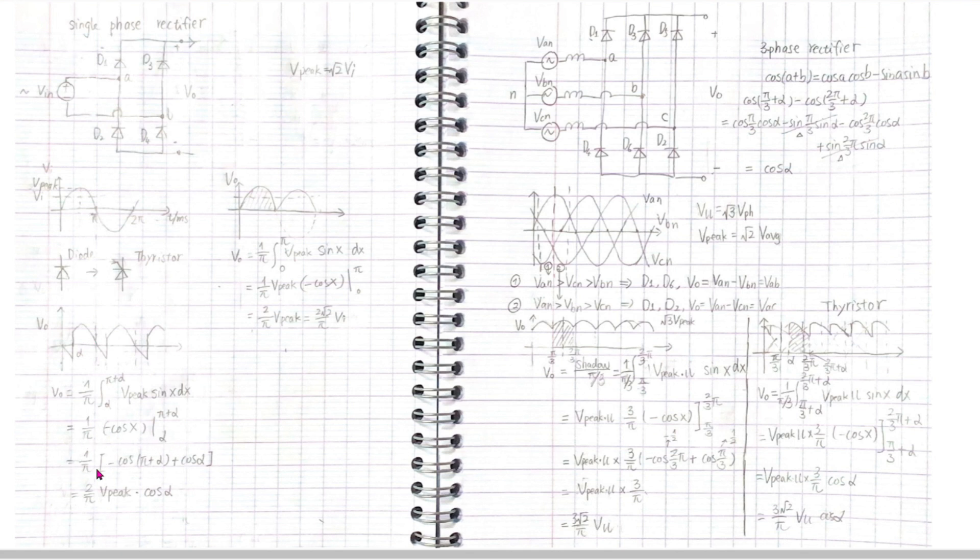The same thing happens on a controlled thyristor three-phase rectifier. The output follows the line-to-line voltage while the thyristors are fired. To calculate the average output voltage, we need to use this shadow surface to divide a third pi. Here the cos 2pi/3 plus alpha can be derived by this formula, and we get the final value cos alpha.